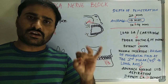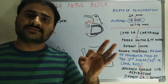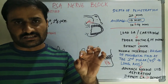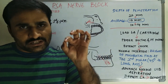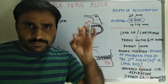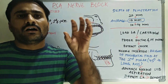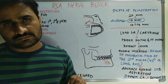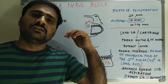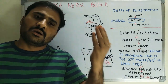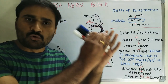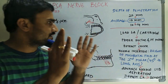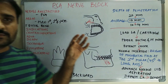The areas anesthetized are the maxillary molars — the third molar, second molar, and first molar — except the mesiobuccal root of the maxillary first molar in 28 percent of cases, because the MSA nerve is present in 28 percent of cases. When present, it supplies the mesiobuccal root of the maxillary molar, along with the buccal mucoperiosteum and bone in the maxillary molar region.